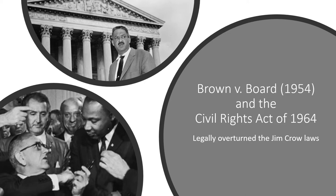The post-Civil War amendments and Justice Harlan's dissents laid the foundation for the successes of Brown v. Board of Education and the Civil Rights Act of 1964. Harlan's dissent in Plessy versus Ferguson later became the basis for Thurgood Marshall's argument in support of Brown v. Board of Education. The successful Brown v. Board cases overturned Plessy, removing the legal backing to racial segregation.